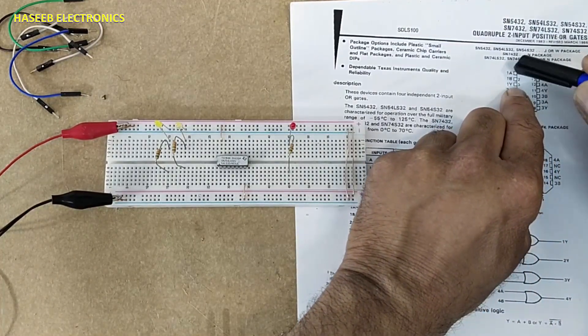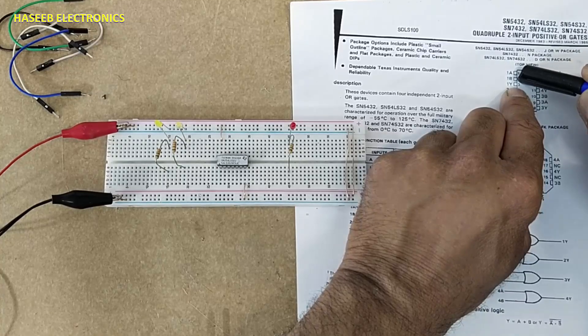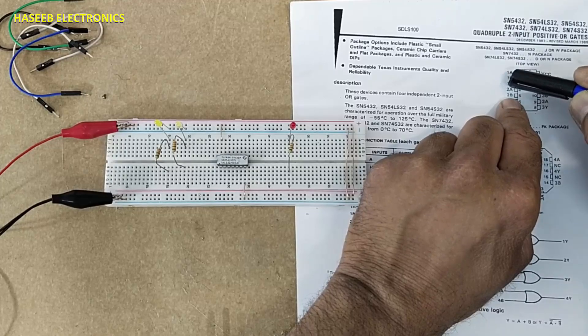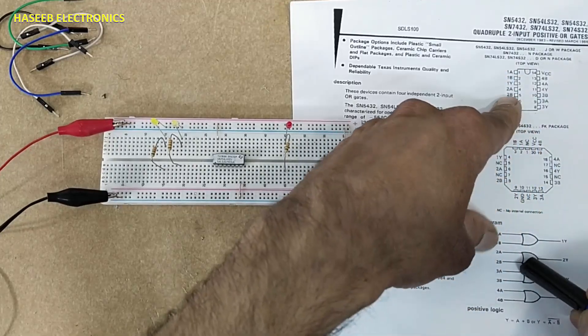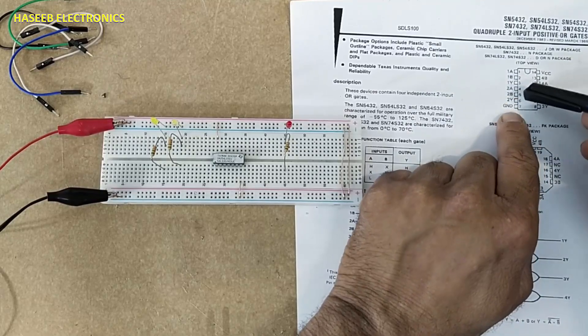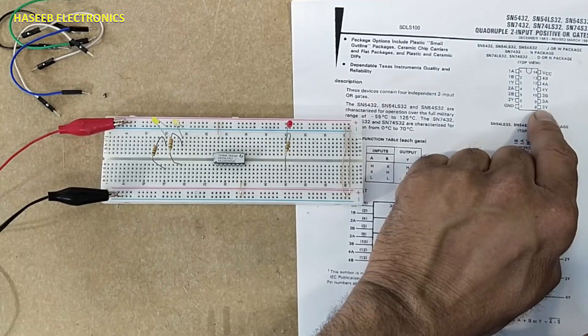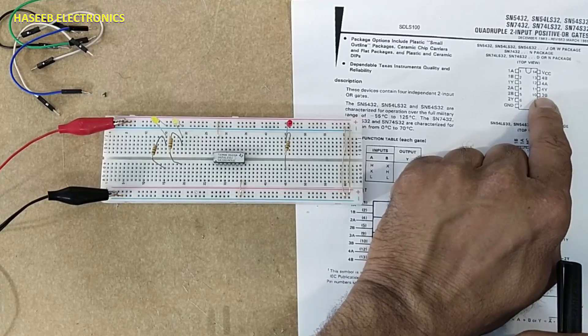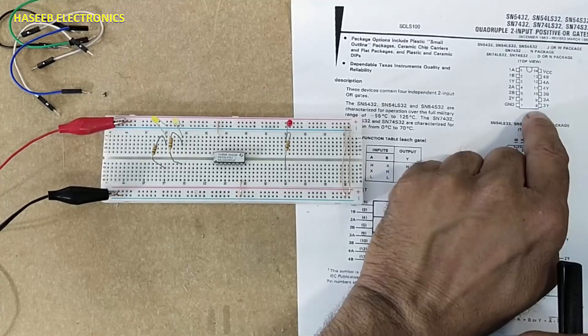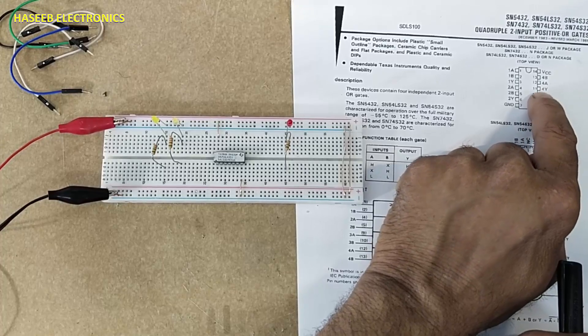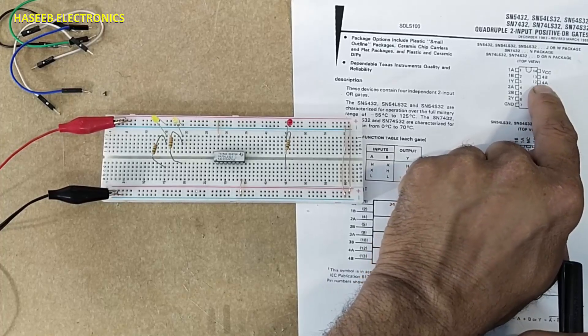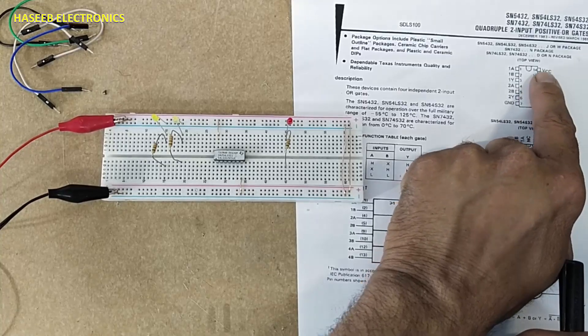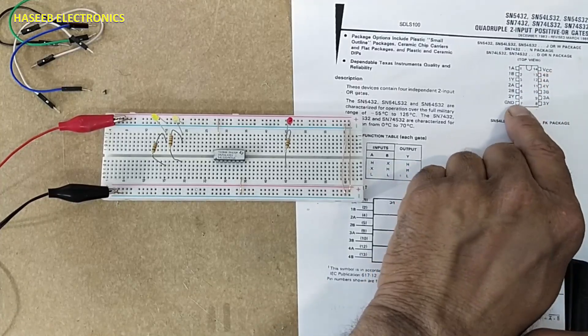A, B input, number three output. Then second: 2A, 2B - two means second gate, 2A, 2B input, 2Y output. 3Y, this is output of third gate, 3A and 3B, pin number nine and ten input, pin eight output. 4Y, this is output, 4A, 4B, pin number 12 and 13 input, 11 output. Pin 14 is VCC, pin 7 is ground.